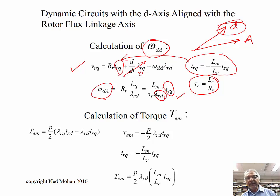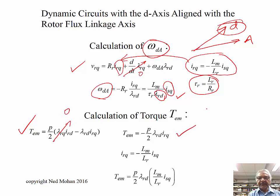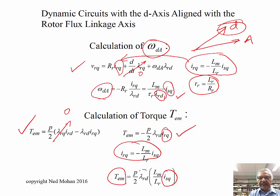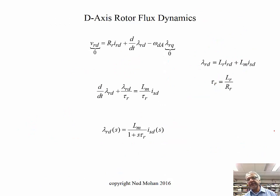Next, we will estimate how much electromagnetic torque is being generated. From the equation derived in Chapter 3, if lambda RQ is zero, it reduces to a simpler form. Substituting for IRQ, we can express this torque in terms of ISQ. So if you want to change electromagnetic torque as a step and keep lambda RD constant, the electromagnetic torque is related to ISQ by a constant. It is also possible to change the flux in D-axis in flux weakening mode, so it's useful to make this analysis more general.